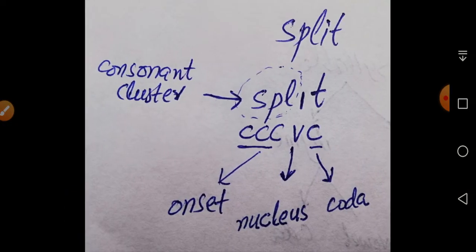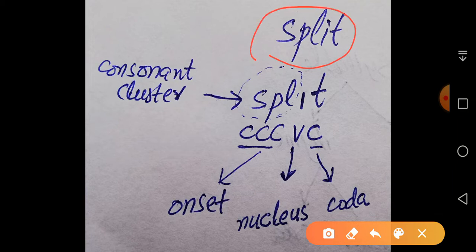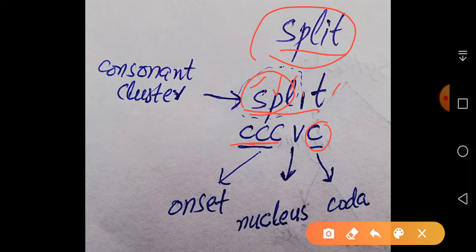The word 'split' — S-P-L-I-T — has five letters and also five sounds. There are three consonants coming together in the onset: /s/, /p/, /l/. Then there is the nucleus /ɪ/, and one consonant /t/ in the coda. Since there is only one consonant in the coda, it is not a cluster there. But the three consonants in the onset form a consonant cluster.